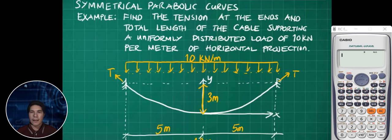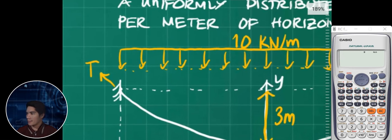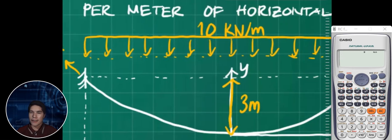The problem is symmetrical parabolic curve. What is the tension at the ends? It's symmetrical because the two supports are in line. The question is: what is the tension at the support? Since it's symmetrical, the tension at both supports will be the same.